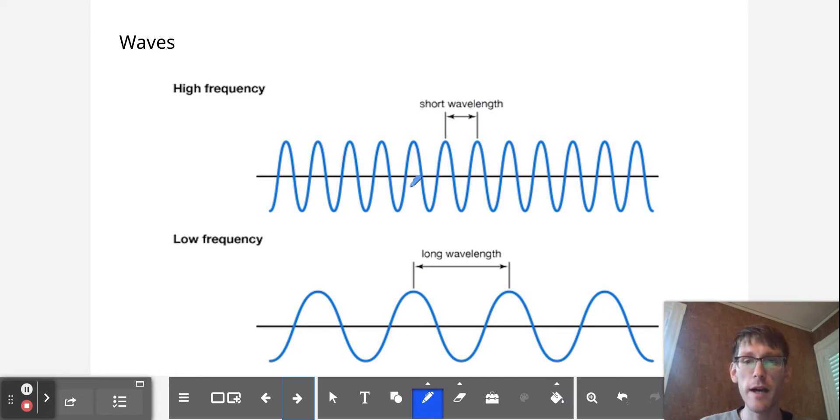So if we look at this wave on top, this wave has a short wavelength, which is the distance between the peaks. We can say it also has a very high frequency because it is going up and down really fast. On the other hand, this wave down here has a low frequency and a longer wavelength.